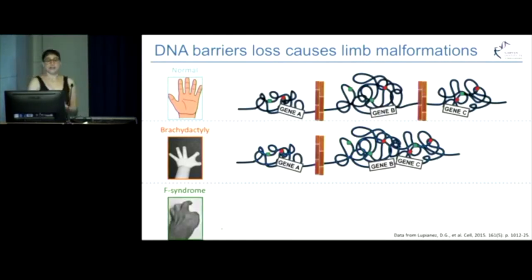F-syndrome is another example. This is where you have abnormal segmentation of the hand, and it often results in a fusing of the forefinger and thumb. In this syndrome, what they found was that in early development, there is an inversion of this part of DNA, so it becomes completely flipped around.